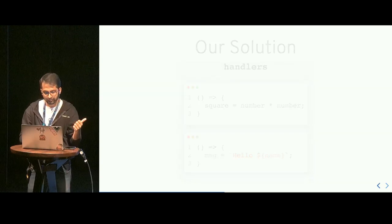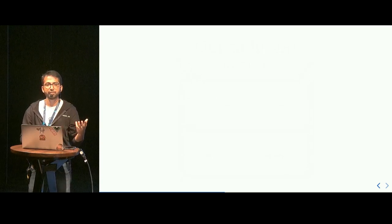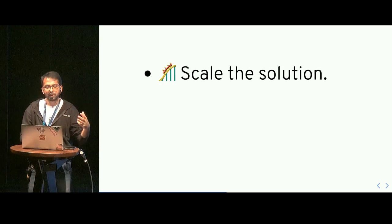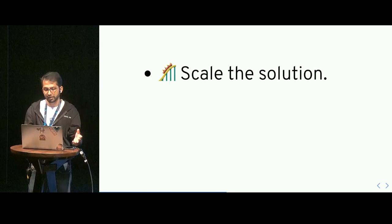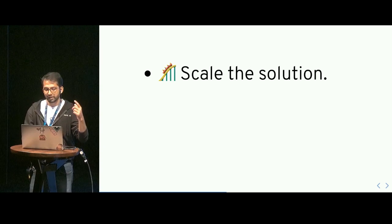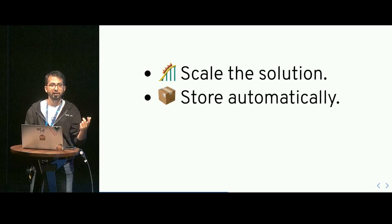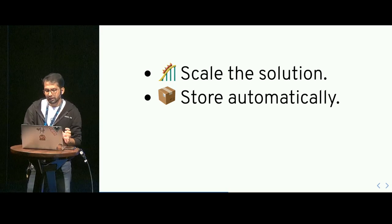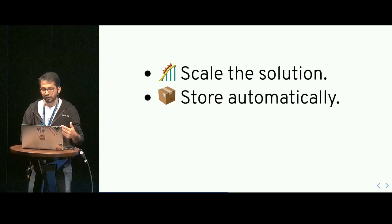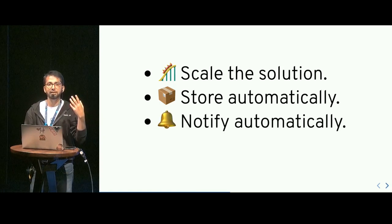We have three major problems to solve. Number one: scale — we may have many data properties and need to store handlers for each in a separate place, just like addEventListener. Number two: whenever a property is accessed, we want the handler to be stored automatically. Number three: we should be able to remove the manual `notifyHandlers` call and have that happen automatically whenever a property is modified.